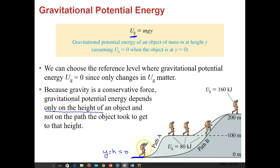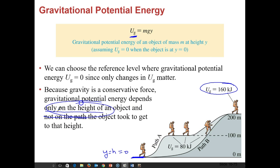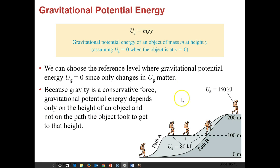Because gravity is a conservative force, gravitational potential energy depends only on the change in height — not on the path taken. If a hiker takes a longer winding path up a hill versus climbing straight up the side, both arrive at the same potential energy at the top. So when calculating gravitational PE, only the change in height matters, as long as there's no friction.